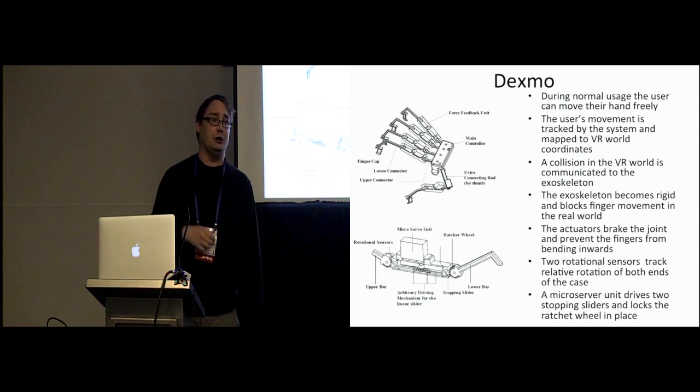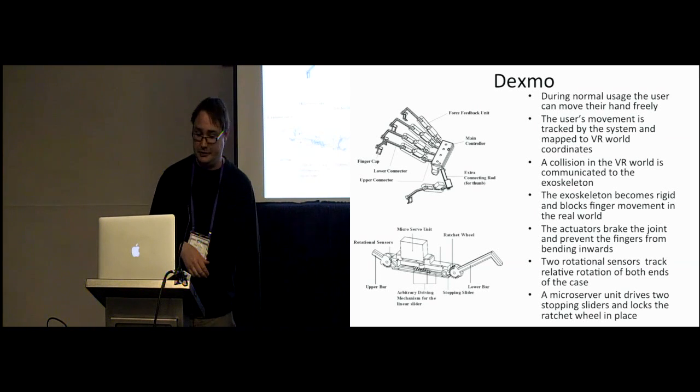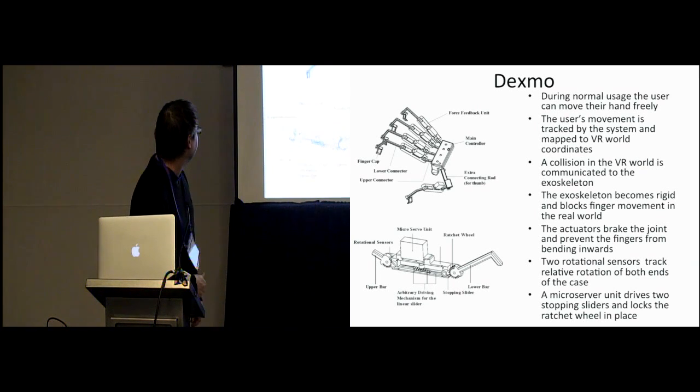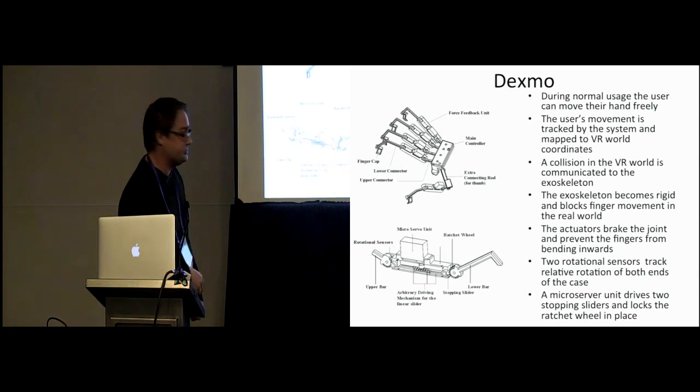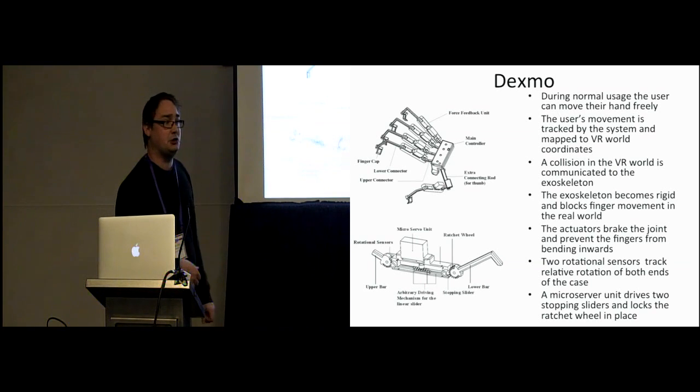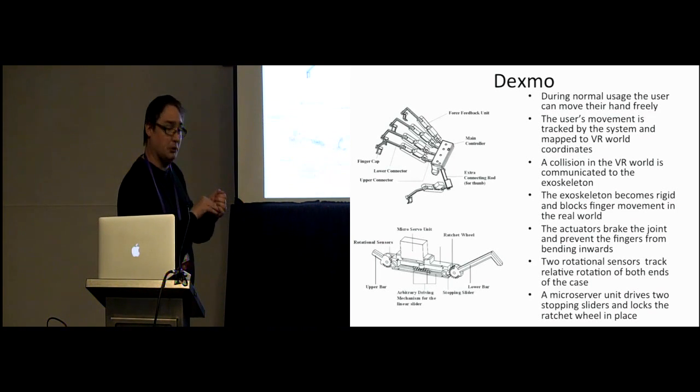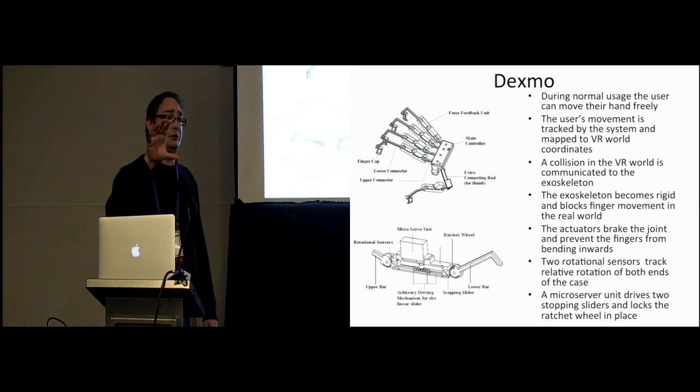And the way we do that is we have this little device at the bottom here with two rotational sensors, and this is normally free-rolling. Once we want to lock it in place, we have this stopping slider here, so there's a linear motion that is actuated by the device. This stopping slider will then block the ratchet wheel, and hence the user cannot physically move the finger anymore, so it's actually physically blocked by the exoskeleton.